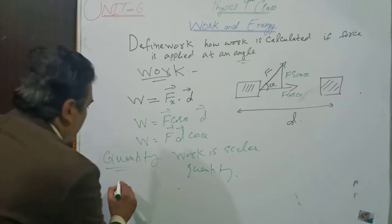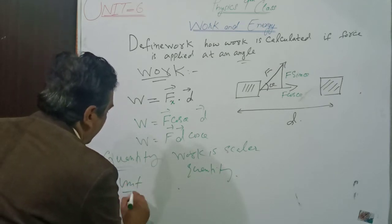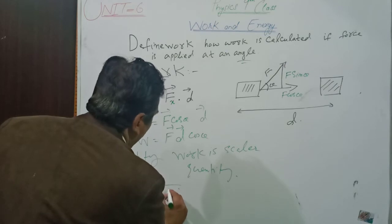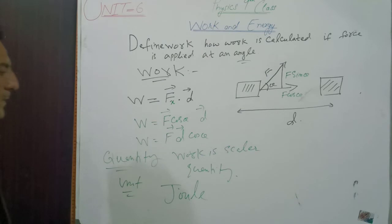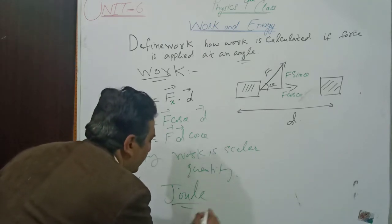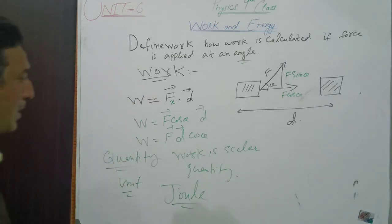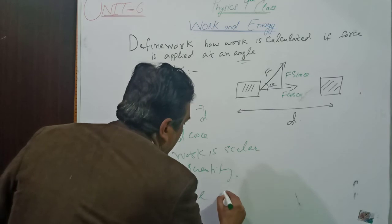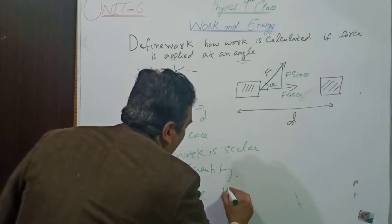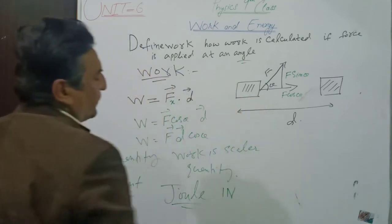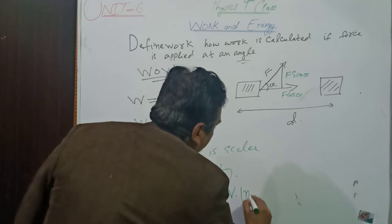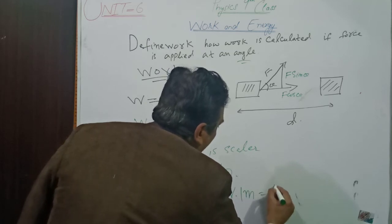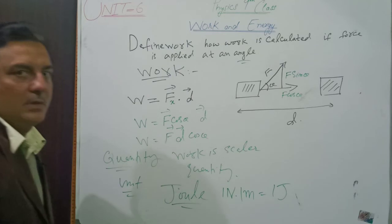The unit of work, the SI unit of work is Joule. When one Newton force acts on a body and the body covers a displacement of one meter, then one Joule of work is done.